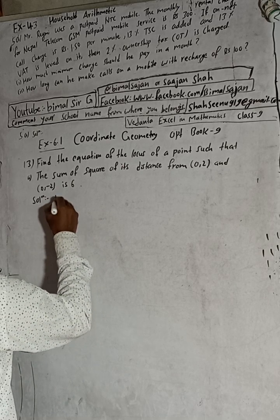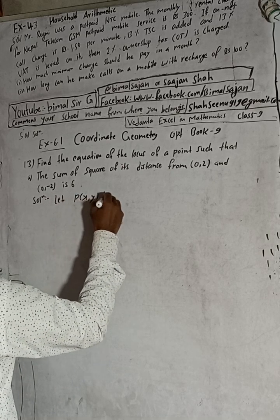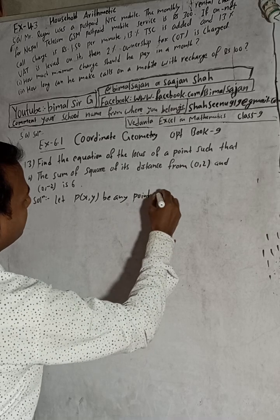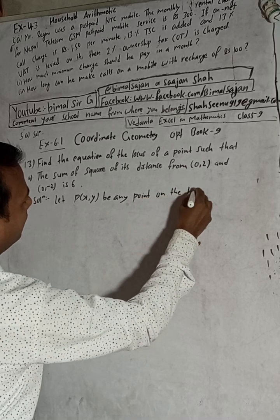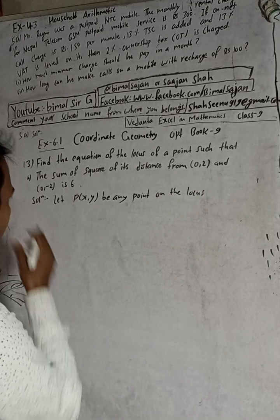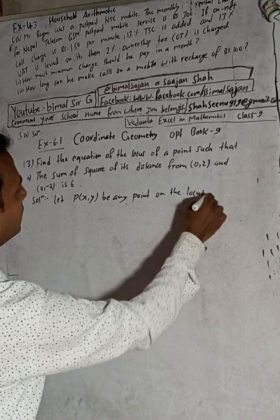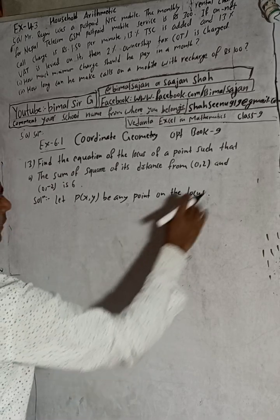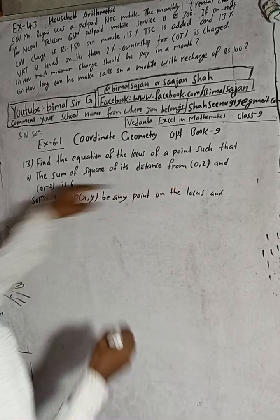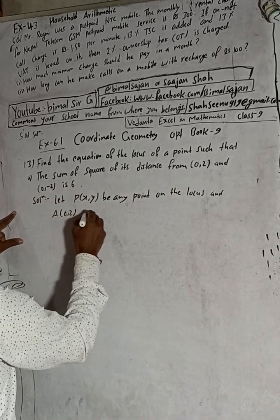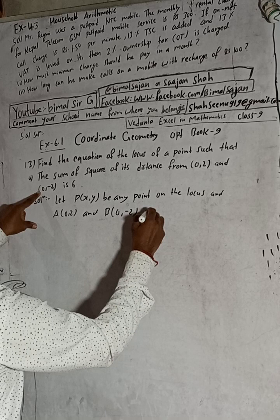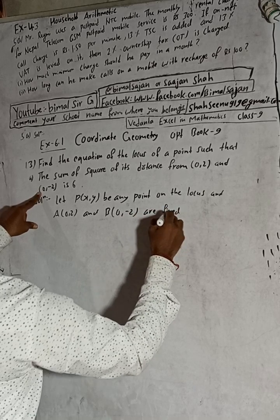Let P(x, y) be any point on the locus. We suppose A = (0, 2) and B = (0, -2) are fixed points.